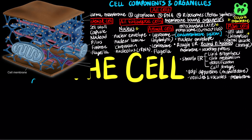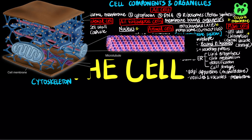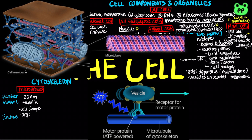The cytoskeleton is a network of fibers that organizes structures and activities in the cell. It is composed of three main types of molecular structures. The thickest components are the microtubules, which are hollow rods about 25 nm in diameter, made of tubulin monomers. Microtubules function in maintaining cell shape, providing a railroad-like pathway where organelles can travel, driven by motor proteins and powered by ATP molecules.